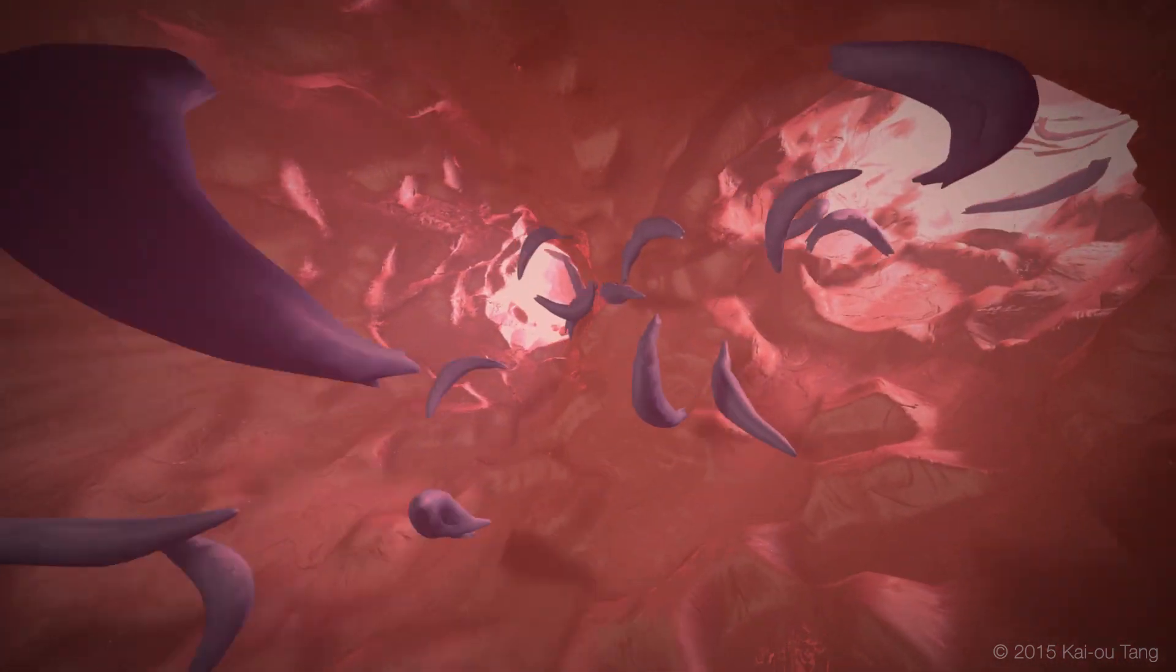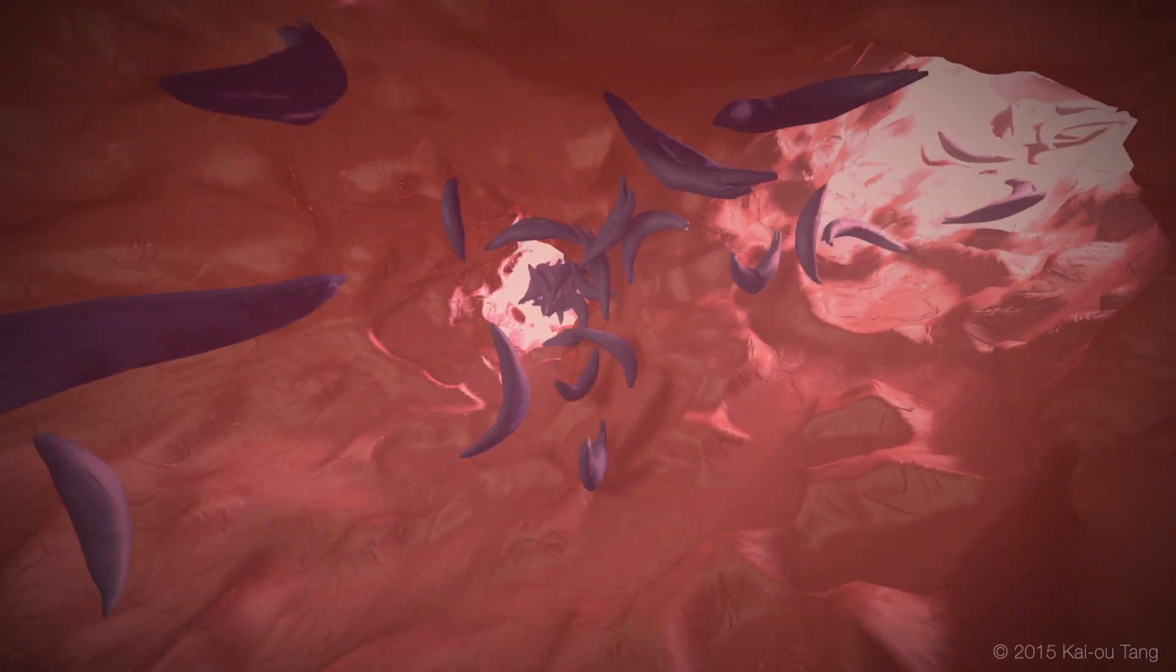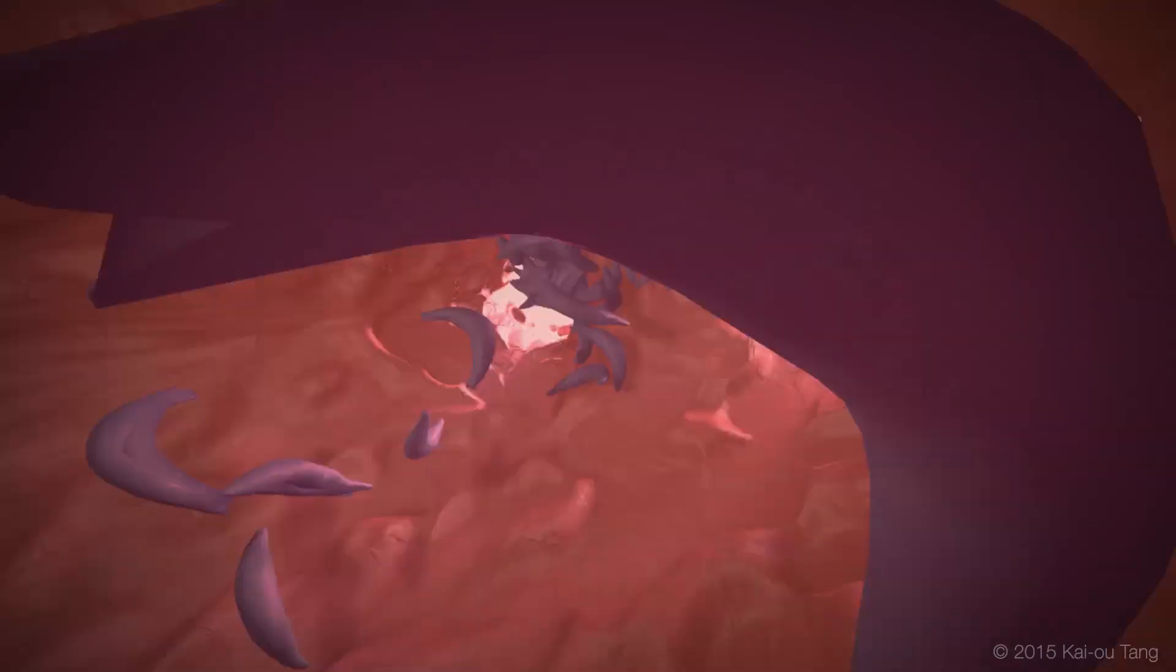The irregular sickle shape increases the likelihood that the erythrocytes will become lodged and occlude small blood vessels, which could lead to vessel inflammation, pain, as well as tissue damage.